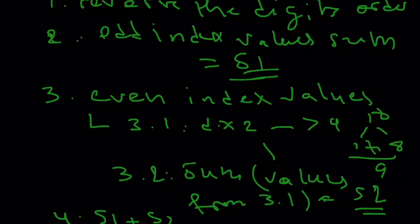We check modulo 10. If it's equal to zero, then the credit card is valid. If it's not equal to zero, then the credit card is not valid — which basically means this sum has to end in zero.